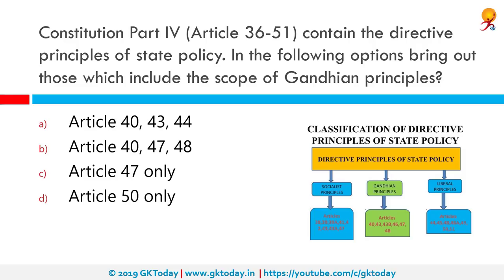Constitution Part 4, Articles 36 to 51, contains the Directive Principles of State Policy. Which articles include the scope of Gandhian principles? Articles 40, 43, 43B, 46, 47, and 48 are based on Gandhian principles. Article 40 states organization of village panchayats; Article 47 states to bring about prohibition of intoxicating drinks and drugs injurious to health; and Article 48 states to prohibit the slaughter of cows, calves, and other milch and draught animals. These are all directive principles based on Gandhian thought.